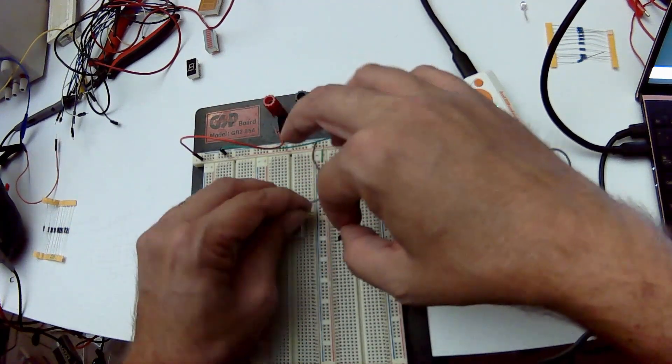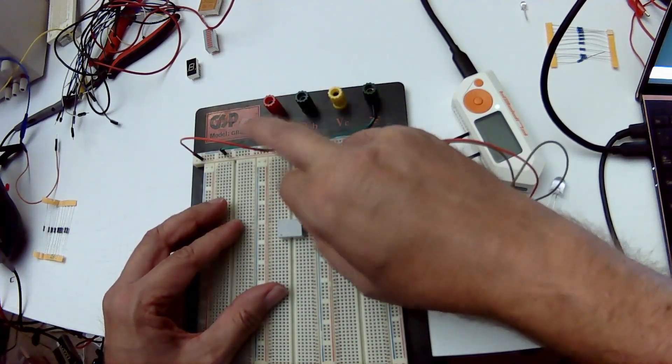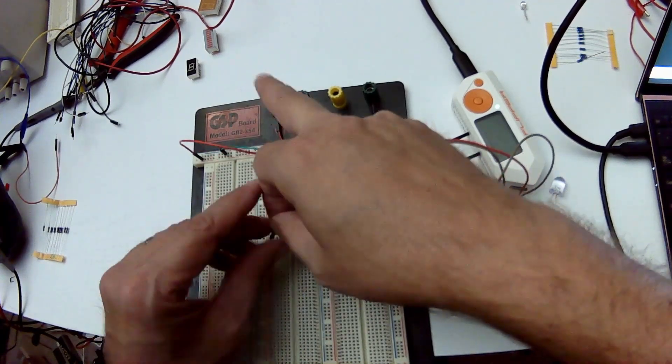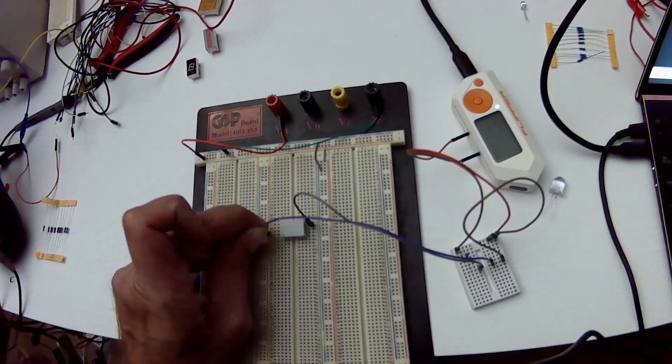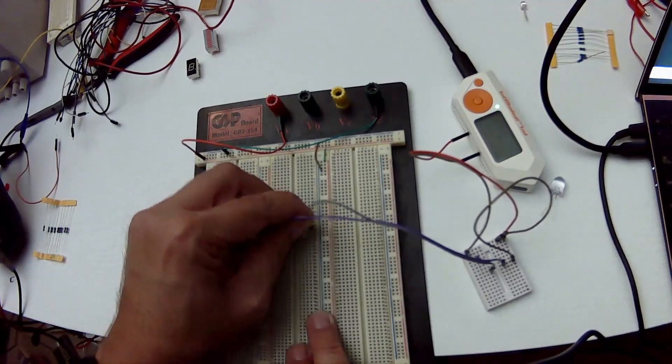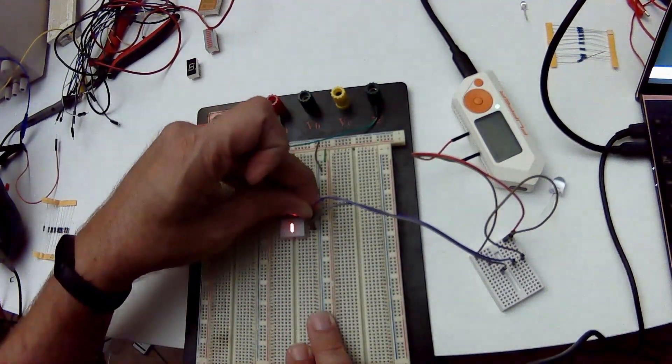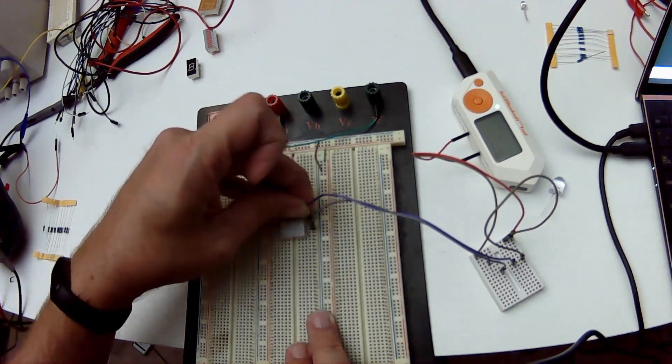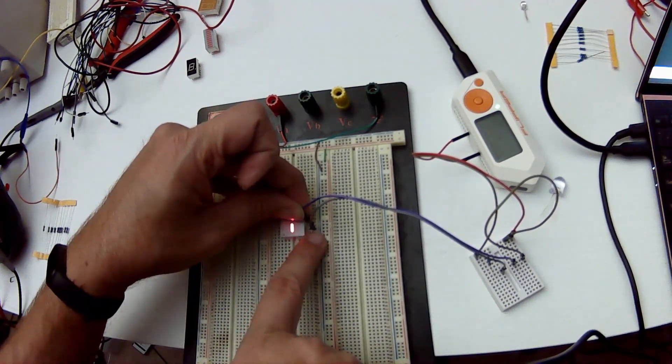It doesn't look like it. So we'll move down one pin and try it again. Still nothing. We'll move to the third pin. Ah, we got a light. Let's try another segment. Perfect. So it looks like this is our common ground, the third pin on the right.